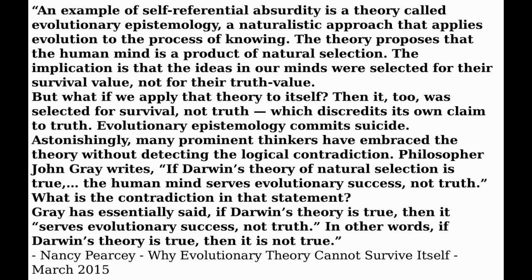There's a British philosopher named John Gray. Listen to this quote and see if you can detect the contradiction. He said: 'If Darwin's theory of natural selection is true, then the human mind serves evolutionary success, not truth.' It's astonishing that he doesn't catch that — in other words, he said, if Darwin's theory is true, then it's not true.